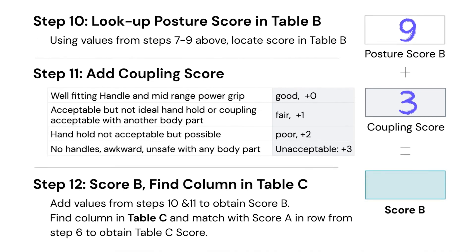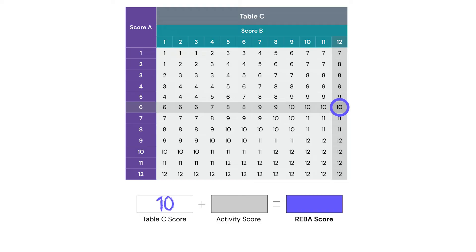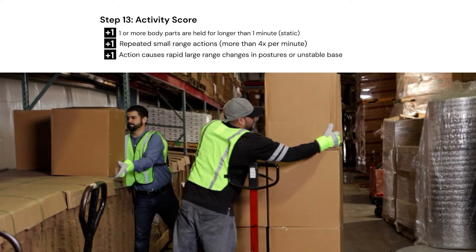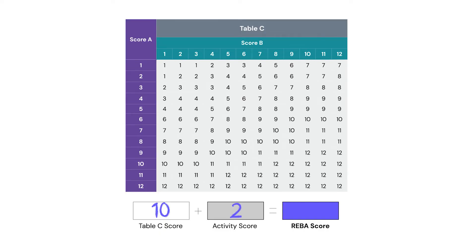Then at step 12, we add steps 10 and 11 together to give us our column B score. Our column B score is the final entry into table C — we find the column on table C, line that up with the row from score A, and where those two intersect, that's our table C score. We're not finished yet — in the lower right-hand corner, there's also a step 13. This is a modifier we can use to consider frequency, duration, or intensity of movement. In our case, they have high frequency — moving a lot of boxes per minute — and broad ranges of motion, so we give two modifiers. Adding those to table C gives us our final REBA score.